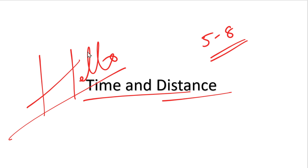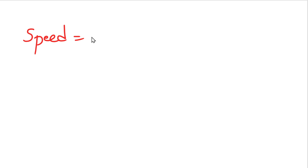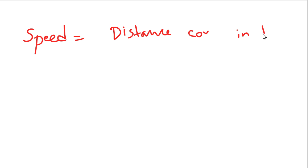The first type I am going to cover is basically speed. What is speed? Speed is the distance covered in time — distance covered in time.